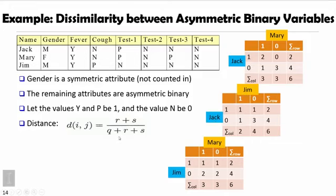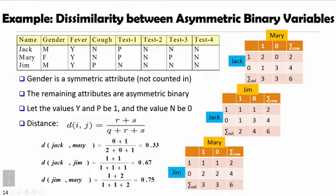In this case, we can calculate their difference. Probably we can easily see Jack and Mary actually are most similar. Jim and Mary are most different. We may conclude that Jack and Mary may have similar disease in this case.